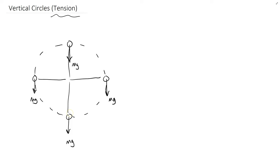Tension at every point is going to point towards the center. At the bottom, the tension needs to be large enough — larger than the weight — to result in a net upward centripetal force. On the sides, the tension points inward and is the complete centripetal force. At the top, since weight is already pointing directly down toward the center, you don't need much tension at all.